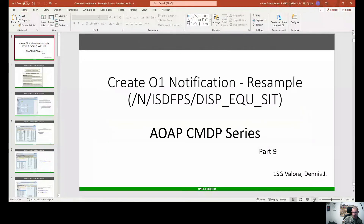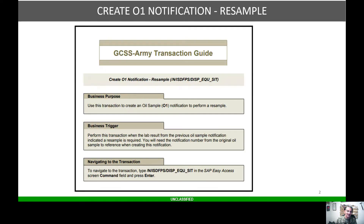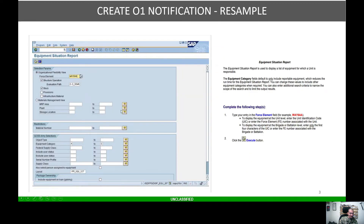Government computers are slow. So we're creating an O1 notification resample. This is our transaction guide out of EUM Plus. We're going to use this transaction to create an O1 oil sample. Perform this transaction when the lab results from the previous oil sample notification indicate resampling is required. You will need the notification number for the original oil sample to reference when creating this notification.